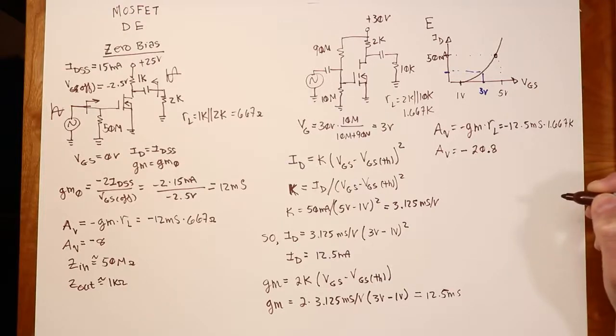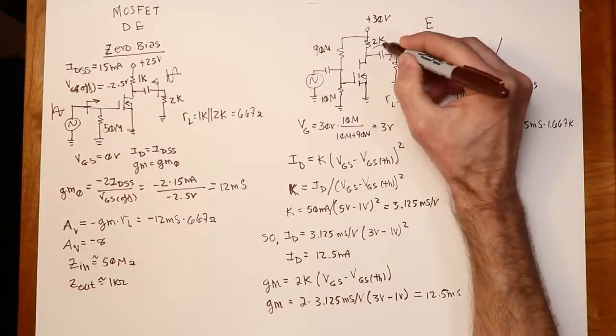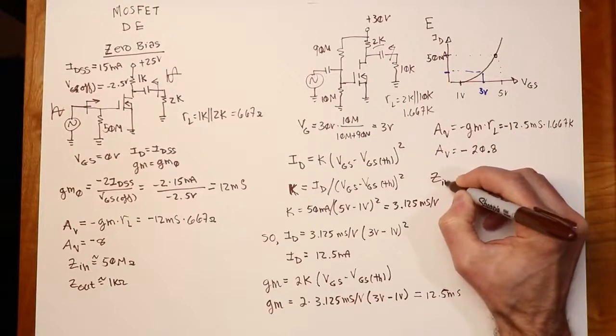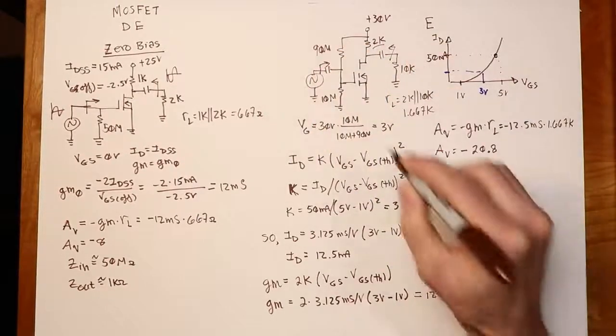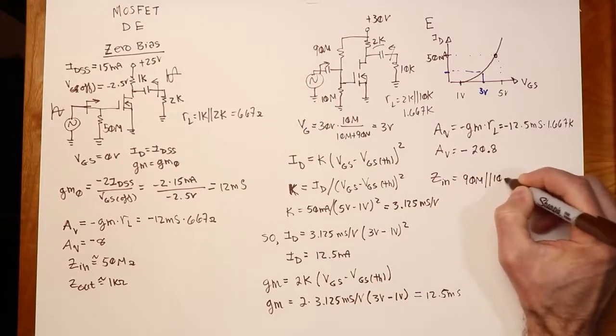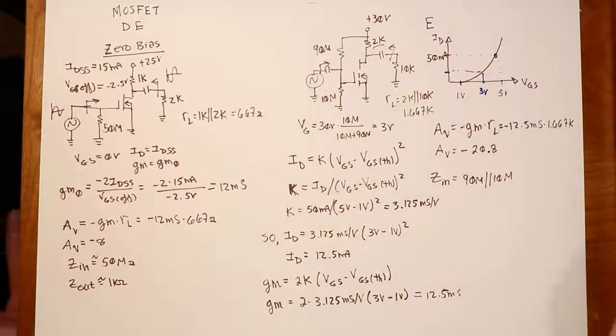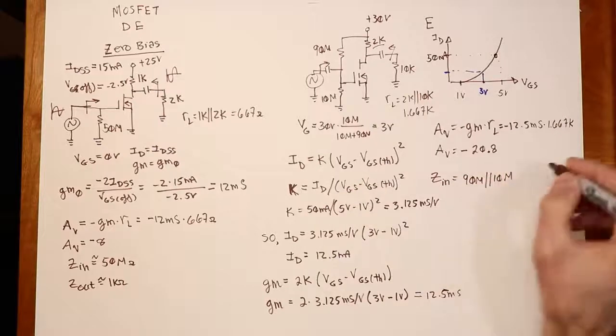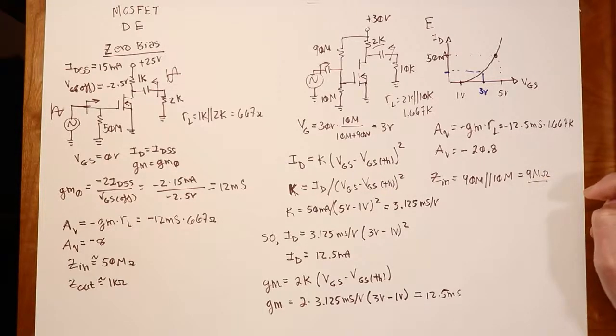All right. What else might we be interested in? Well, the output impedance. Looking back from here, that's going to be 2K ohms. What about the Z in? Well, you're sitting out here and, you know, pretend you're the generator. You look in, what do you see? Well, you see 90 meg parallel with 10 meg in parallel with the Z in gate. And again, the Z in gate is, you know, through the roof. So we put 90 in parallel with 10, and you get a 9 mega ohm input impedance. Okay? And that covers pretty much everything.